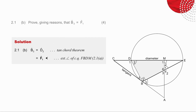In this question, you are asked to prove that angle B3 is equal to angle F1. Angle B3 is an angle between a tangent and a chord, so go from either side of the chord up to the circumference of the circle. Angle B3 is equal to angle D2 because of the tan-chord theorem. You've just proved that DMFB is a cyclic quadrilateral, so angle D2 is equal to angle F1 because of exterior angle of the cyclic quadrilateral. Therefore angle B3 is equal to angle F1.